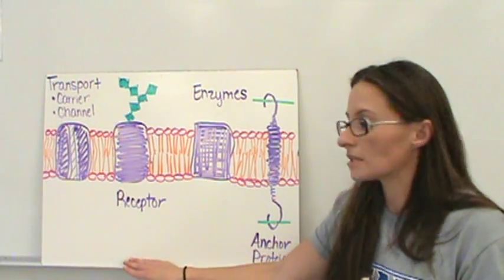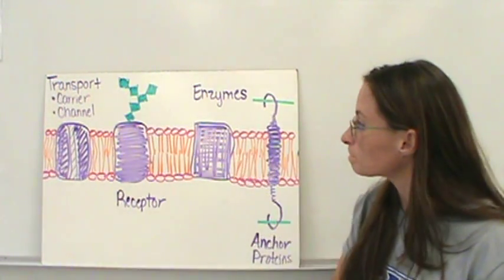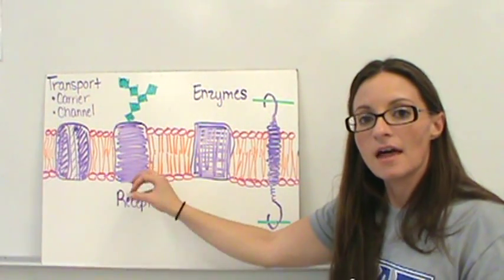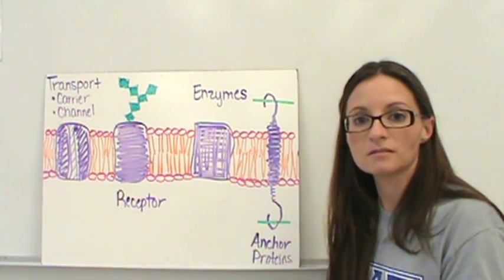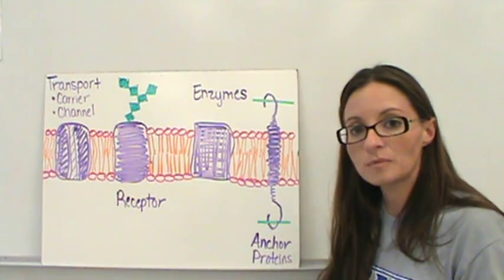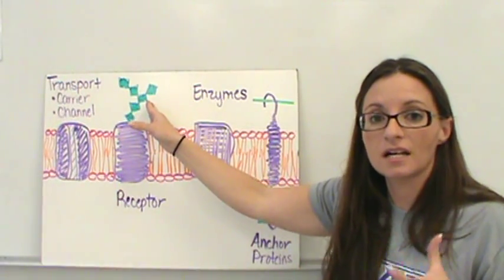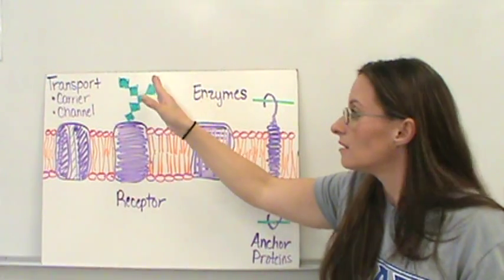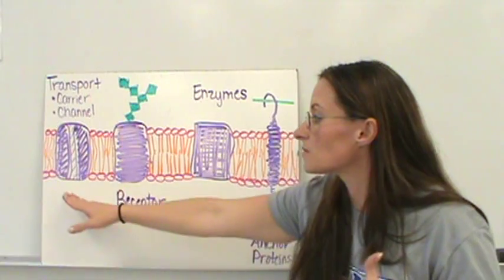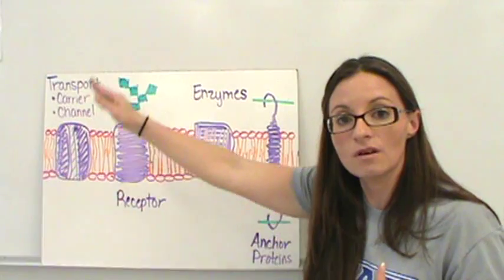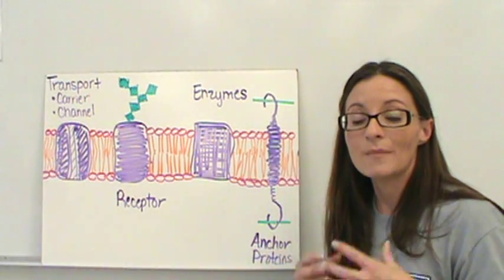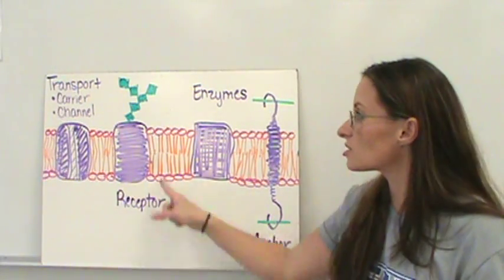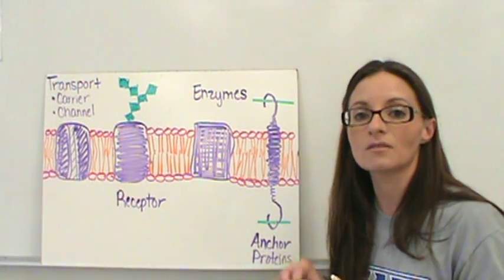The second membrane protein type is receptor proteins. These have carbohydrates on the outside, and that carbohydrate structure gets messages from the outside of the cell and sends those messages into the cell, which the cell then reads and responds to. For instance, if there's not enough salt on the outside of the cell, the message will be 'send us some salt,' and some carrier proteins will open up to allow those salts through — balancing equilibrium and maintaining homeostasis, meaning a stable environment. Receptor proteins tell the cell what needs to be done.